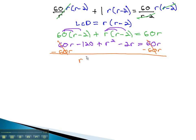Putting this equation in order, we get r squared minus 2r, minus 120, equals 0.